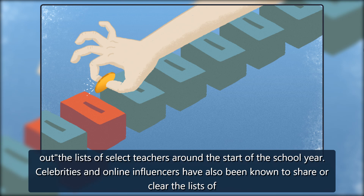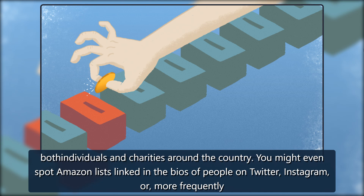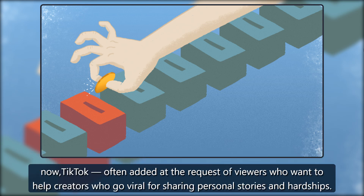Celebrities and online influencers have also been known to share or clear the lists of both individuals and charities around the country. You might even spot Amazon lists linked in the bios of people on Twitter, Instagram, or, more frequently now, TikTok, often added at the request of viewers who want to help creators who go viral for sharing personal stories and hardships.